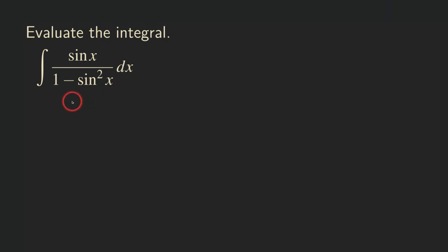So one thing that we can do is look at the denominator and see what actually is happening here. Do you realize that 1 minus sine square x is actually just cosine square?